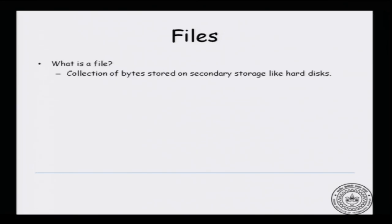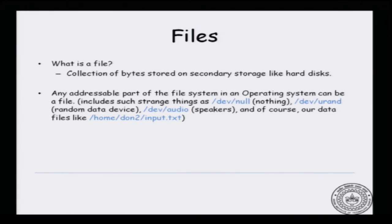You would think that the most natural way to define what a file is: it is a set of bytes, a collection of bytes sitting in secondary storage like maybe your hard drive, maybe your CD-ROM drive or DVD drive. But the actual description is that any addressable part of the file system in an operating system is a file.